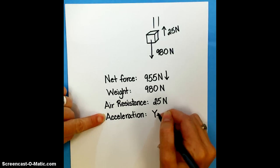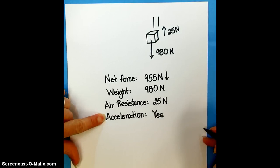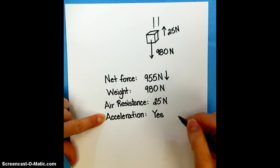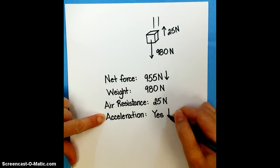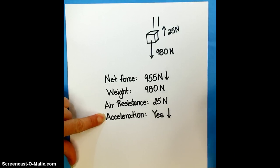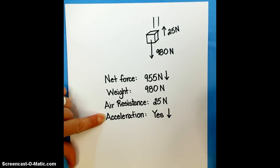We don't know yet how much acceleration, but we do know that we have some. So we say, yes, there's going to be acceleration. And we're just going to put an arrow indicating that the acceleration is going to be oriented down, because acceleration is always in the direction of the net force.